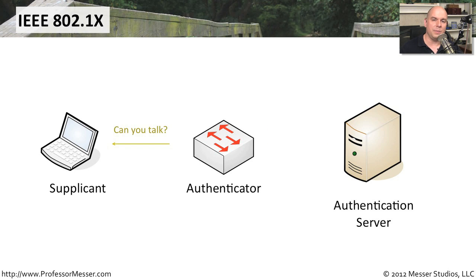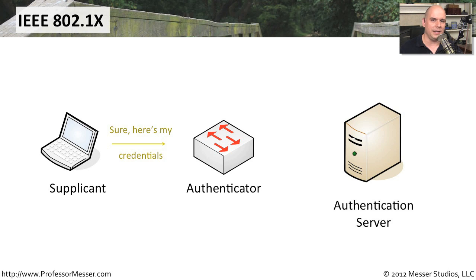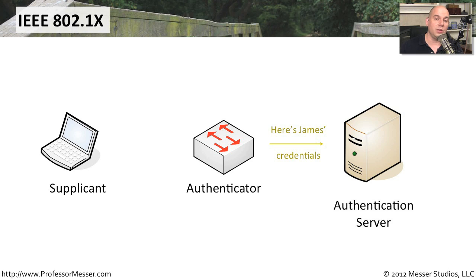The authenticator sends a message to the workstation asking it to communicate securely. The workstation responds with its username, password, and all the credentials needed to get onto the network. The authenticator passes those off to the authentication server, which checks the username and password and confirms the user is really who they say they are.